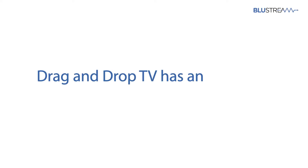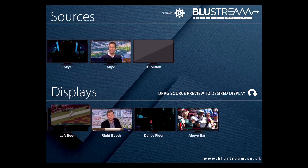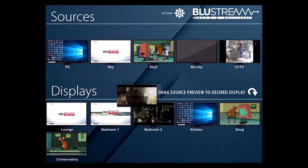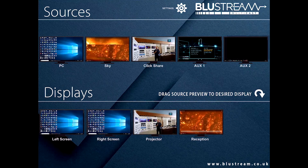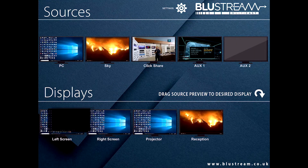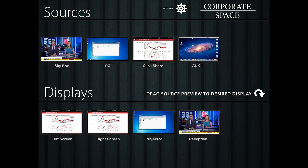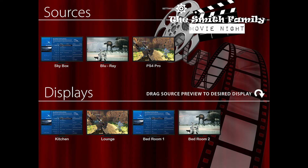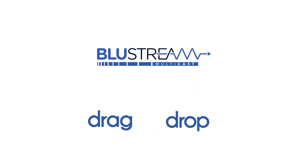Drag and drop TV has an extensive number of applications, from sports bars to home control, conference centers and collaboration spaces. It's even being used in public spaces such as churches and airports. It's also simple to implement your own bespoke graphics, giving you the opportunity to totally personalize your system. And just remember, once set up, the whole system is as easy as drag and drop.